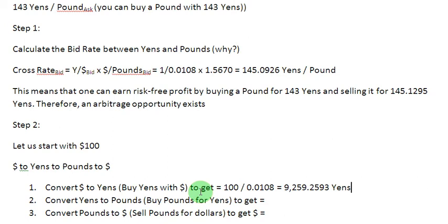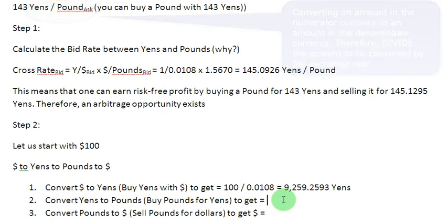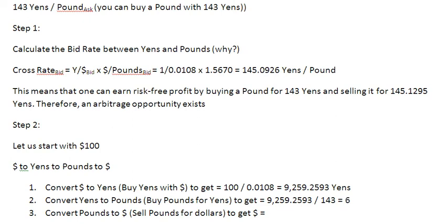That takes me to the second step, where I convert my yens to pounds — that is, I am buying pounds with my yens. For that I need a foreign exchange quotation between yens and pounds. If I am buying pounds with yens, I need to spend 143 yens for a pound — that is the ask rate. So I write 9,259.2593 divided by 143, which gives me 64.7501 pounds.